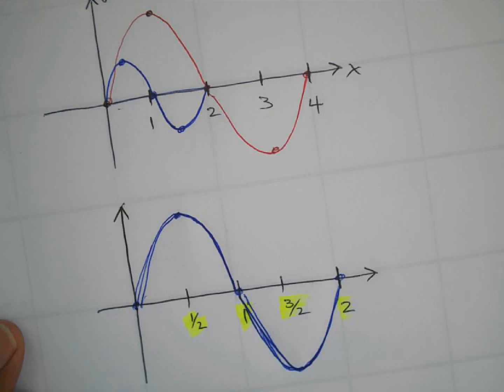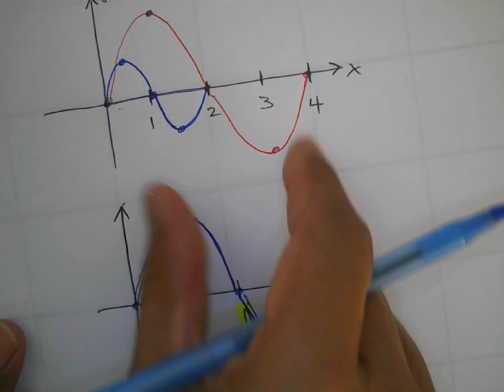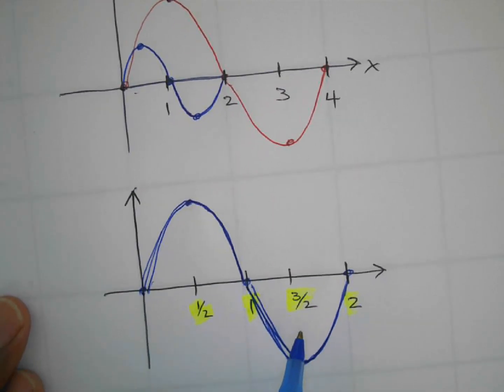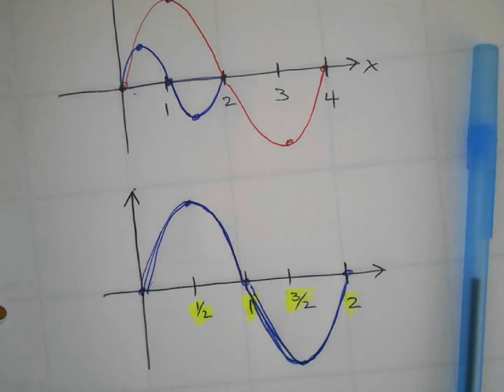But since we're all going to graph it like this, the increments is what's going to tell me what's correct. Okay, so these increments have to be correct. All right, let me pause it here.